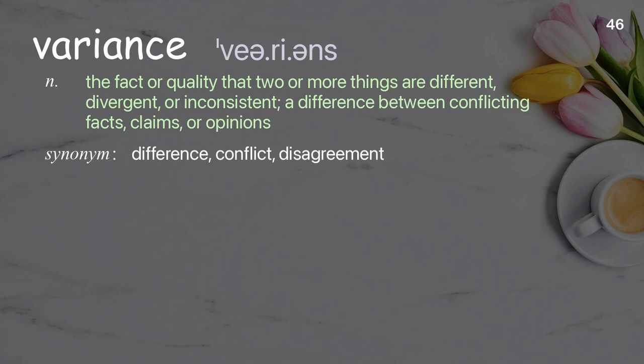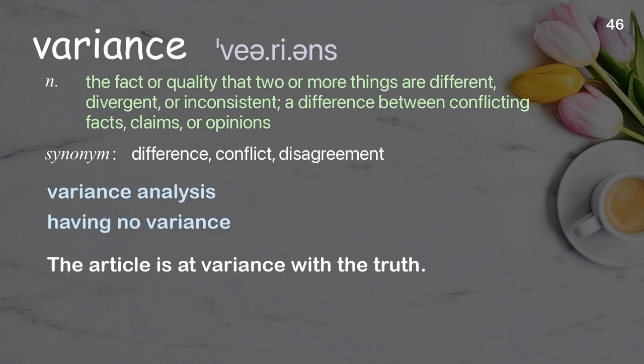Variance: The fact or quality that two or more things are different, divergent, or inconsistent; a difference between conflicting facts, claims, or opinions. Examples: Variance analysis. Having no variance. The article is at variance with the truth.